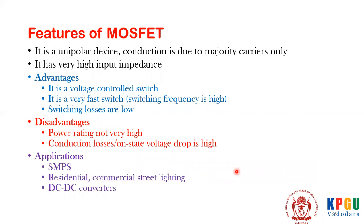The advantages of MOSFET are that it is a voltage-controlled switch and it is a very fast switch — in fact the fastest among all power switches — and switching losses are low. The disadvantages are that it is not possible to have it in a high power rating range, and its on-state voltage drop or conduction losses are high.